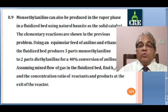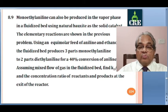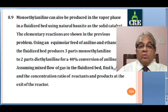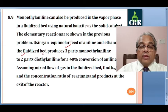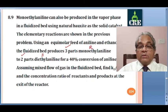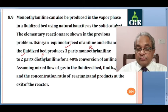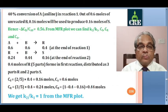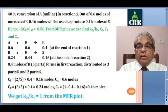Problem 8.9: monoethylaniline can be produced in vapor phase in a fluidized bed using natural bauxite as solid catalyst. The elementary reactions are the same as in the previous problem. Using equimolar feed of aniline and ethanol in the fluidized bed produces 3 parts of monoethylaniline and 2 parts of diethylaniline for 40% conversion of aniline. Xa is 40%. The gas in the fluidized bed undergoes mixed flow. Find K2 by K1 and the concentration ratio of reactants and products at the exit.